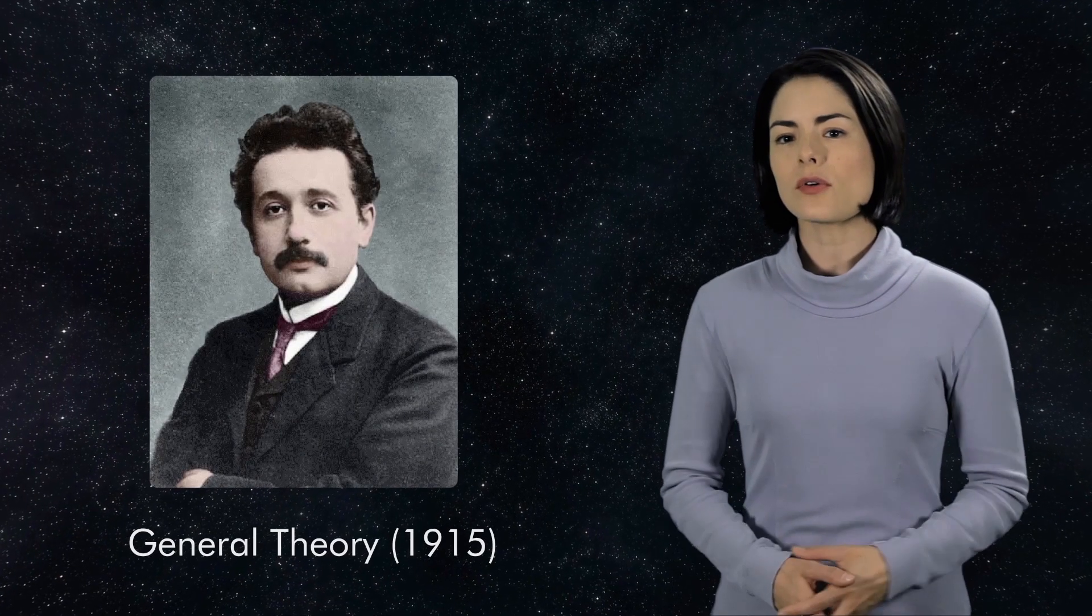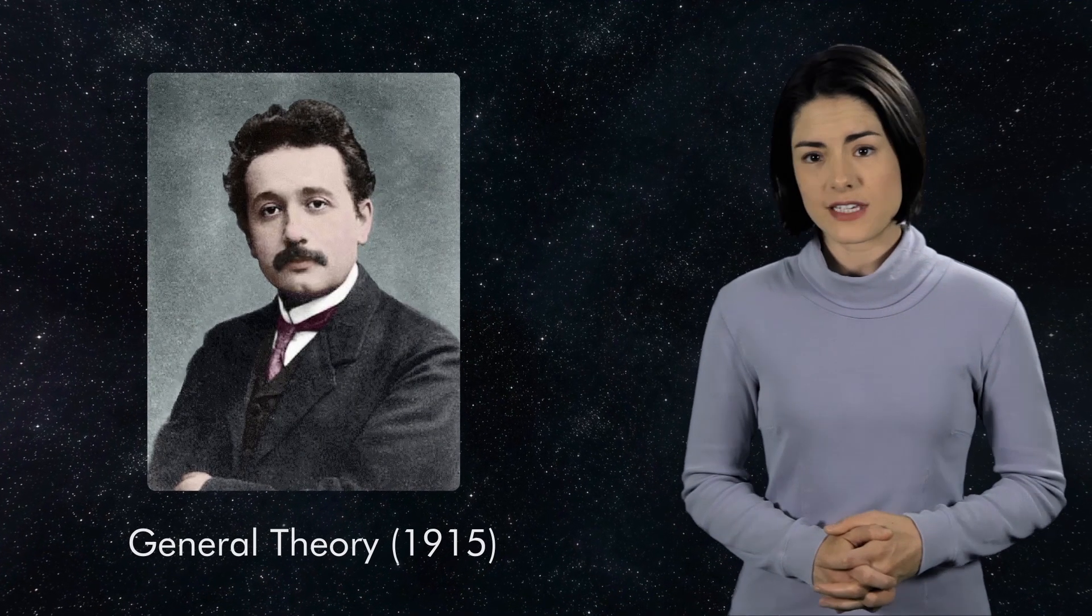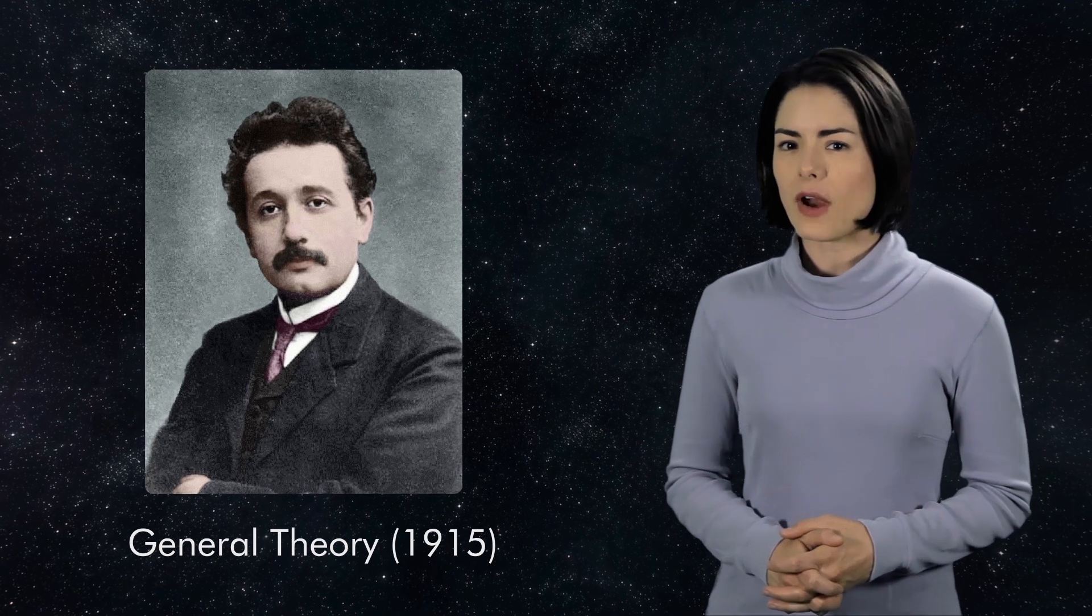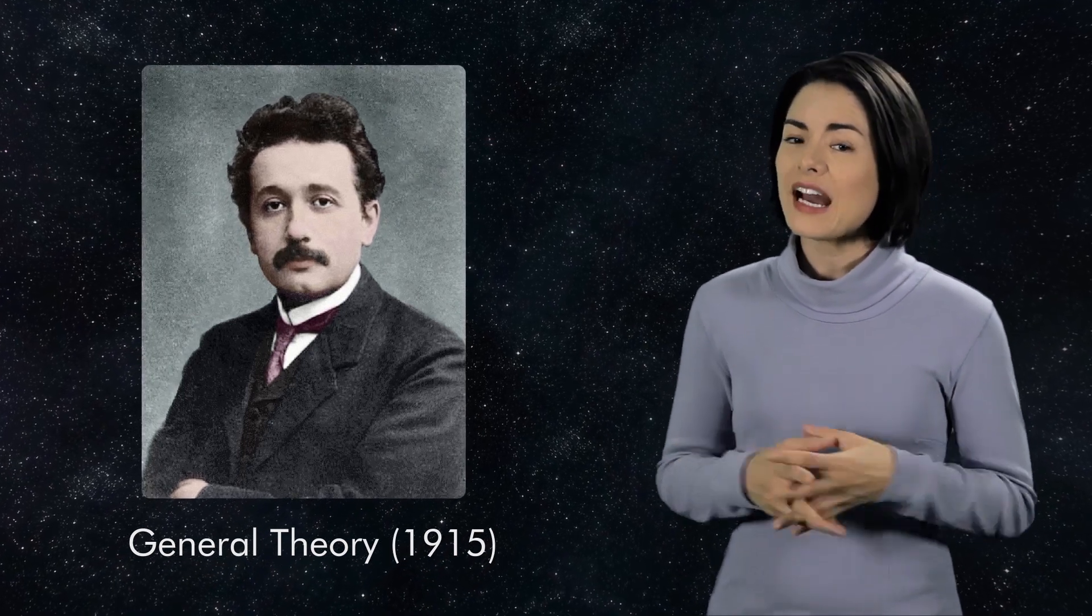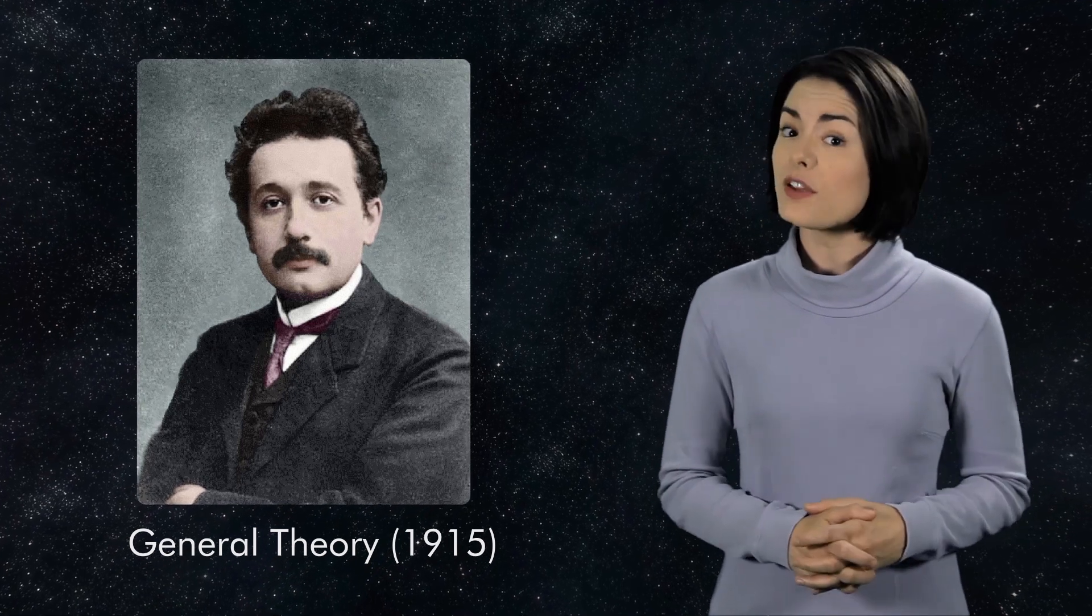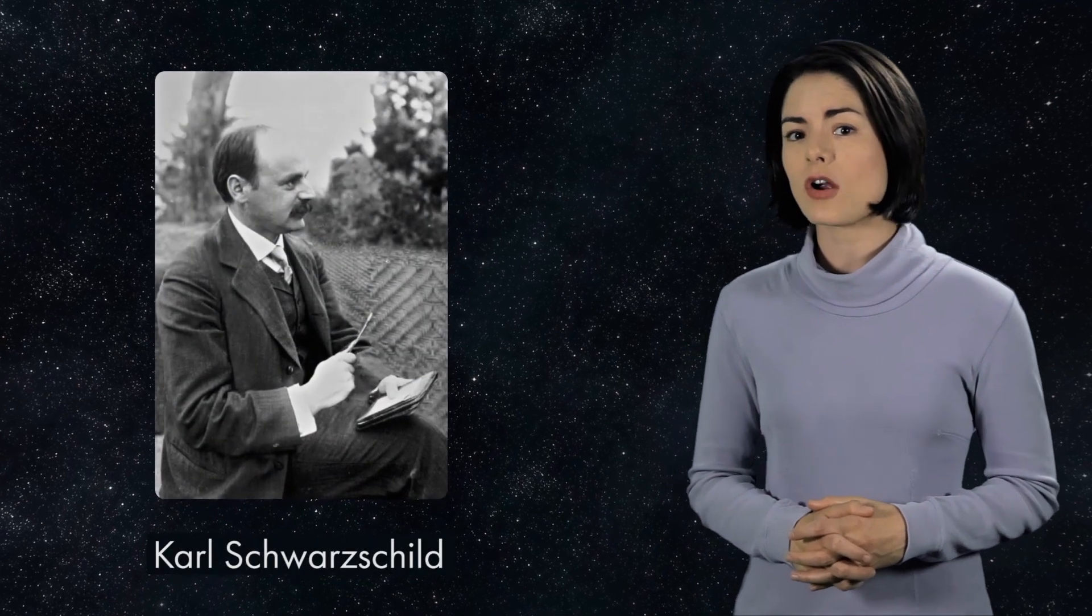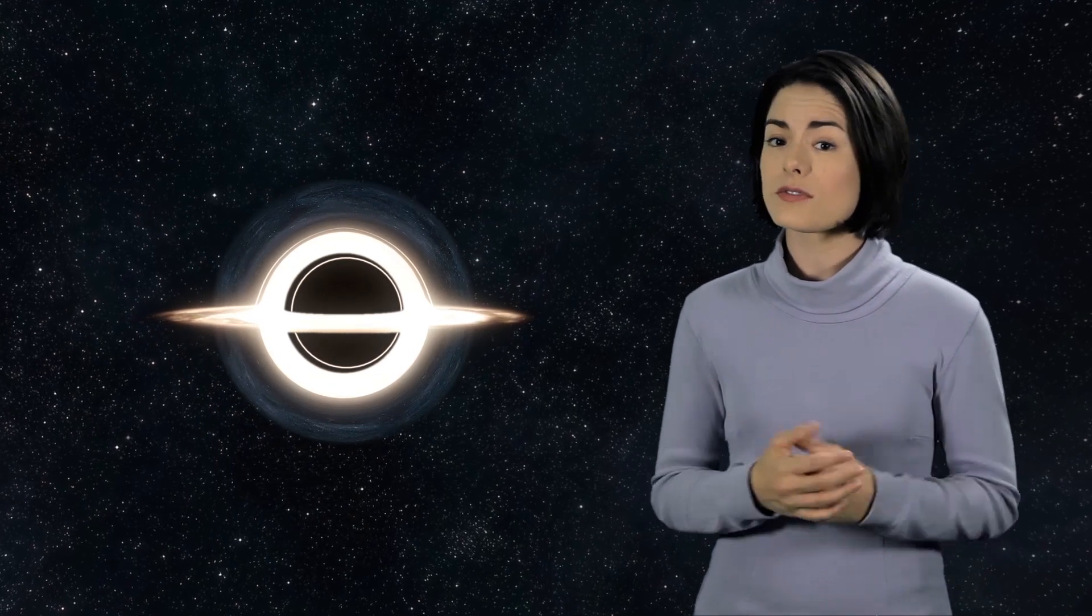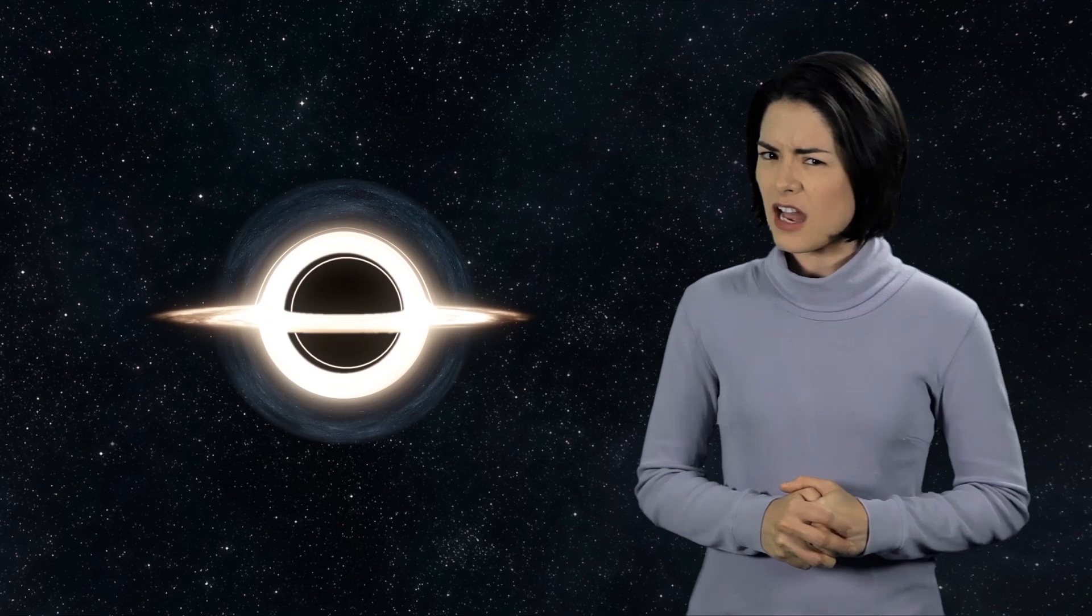Einstein published his general theory of relativity in 1915. And while Newton's theory of gravity could be expressed using a simple formula, Einstein's theory required a set of complex equations known as the field equations. Only a few months after Einstein's publication, the German scientist Karl Schwarzschild found a surprising solution. According to the field equations, an extremely dense ball of matter creates a spherical region in space where nothing can escape, not even light. A curious result. But did such things actually exist?